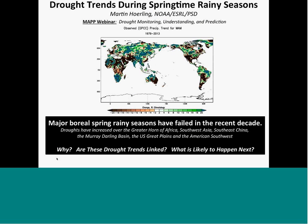Now onto some science looking at trends in rainy season precipitation, focusing on springtime. Over the last 35 to 40 years, a variety of rainy seasons have failed across the globe: the Horn of Africa, Southwest Asian region, Southeast China, parts of the Murray-Darling Basin, the U.S. Great Plains, and the American Southwest. The question we ask is why has this happened — are these diverse regional drought trends linked through some common cause? And can we say something about what's likely to happen next?